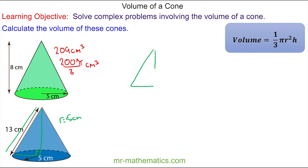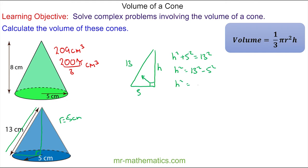We can draw this over here. The perpendicular height is what we're trying to find. We know the base is the radius, which is 5cm, and the hypotenuse, opposite the right angle, is 13. Pythagoras' theorem tells us that h² + 5² = 13², so h² = 13² − 5² = 144.